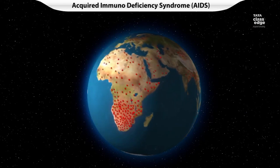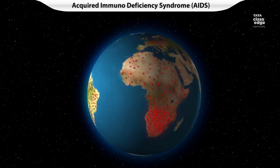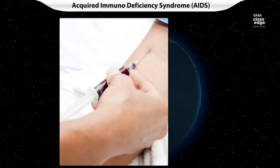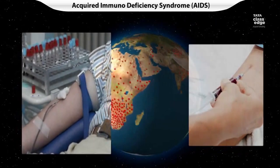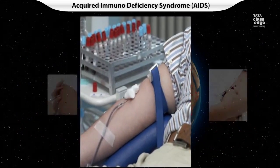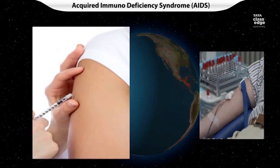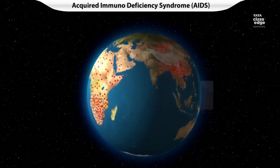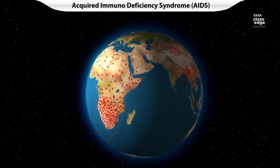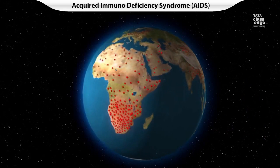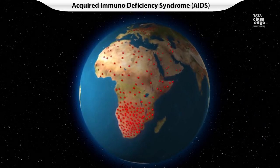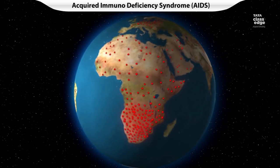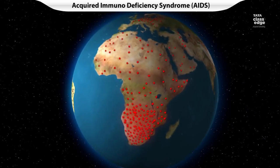Every day, thousands of people around the world are affected by Acquired Immunodeficiency Syndrome, more commonly known as AIDS. There is no cure for AIDS as of now, and it has claimed millions of lives to date. What makes AIDS such a deadly disease? Let's find out.